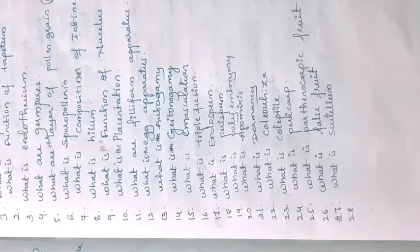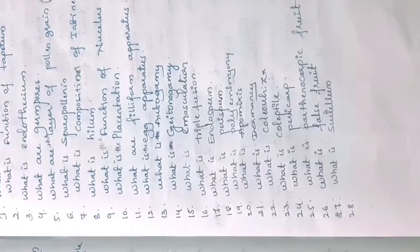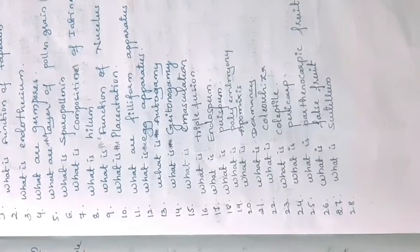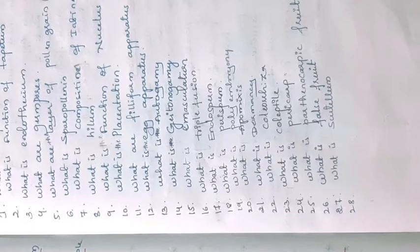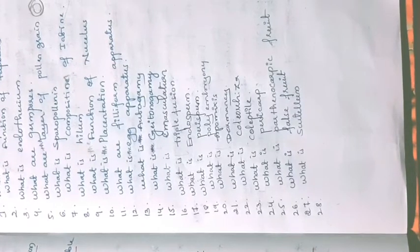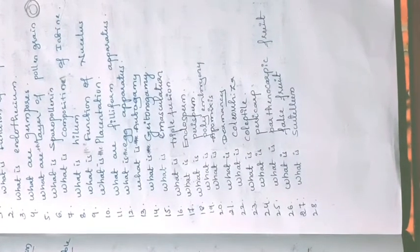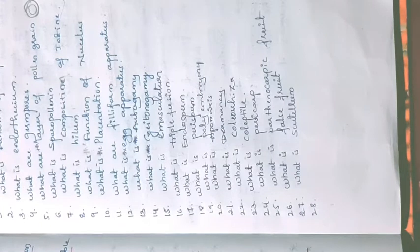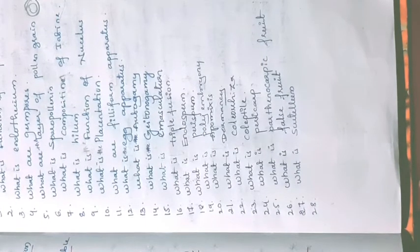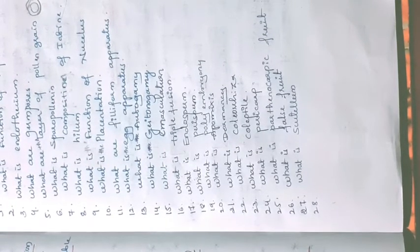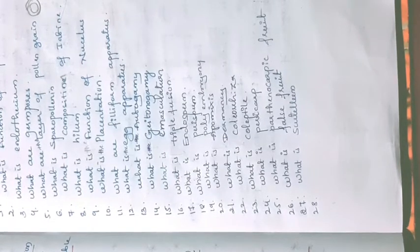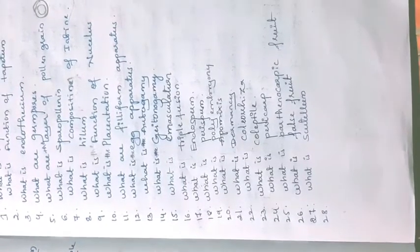What is emasculation? Emasculation is the process of removal of stamens or anthers from a bisexual plant. We discussed this in the artificial hybridization topic. Emasculation is the process of removal of stamens from a bisexual plant in order to avoid self-pollination.